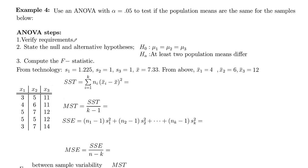So the first step here is to verify requirements. We will assume that everything is verified. State null and alternative. So our null, we've got three different samples here from three different populations. Our null is that all the means are equal. The alternative is at least two population means differ, but we don't know which ones.